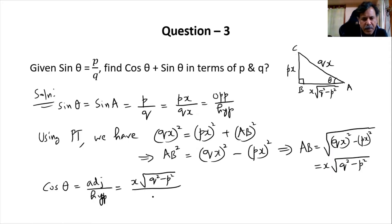Hypotenuse is qx, so we can cancel this x with this x. We have the value of cos θ now.